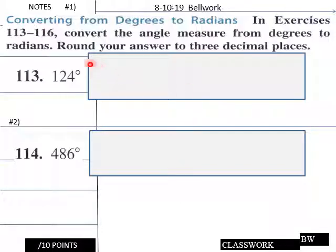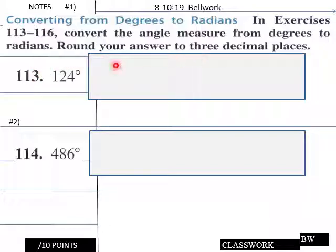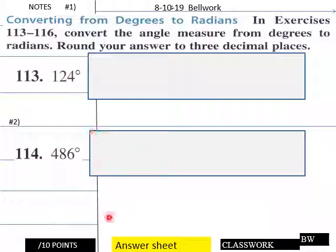So today's bellwork, teachers — in these exercises here, convert the angle measure from degrees into radians, and round your answer to three decimal places. So go from degrees to radians. Give your students about five minutes.